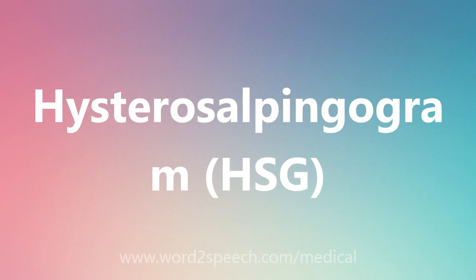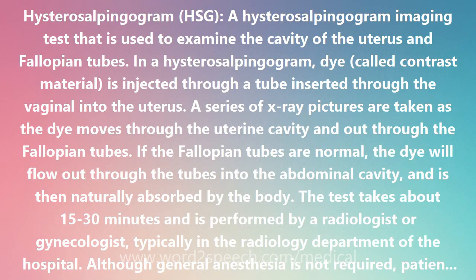Hysterosalpingogram (HSG) is an imaging test used to examine the cavity of the uterus and fallopian tubes. In a hysterosalpingogram, dye called contrast material is injected through a tube inserted through the vagina into the uterus. A series of X-ray pictures are taken as the dye moves through the uterine cavity and out through the fallopian tubes.